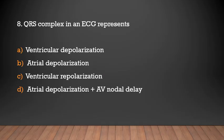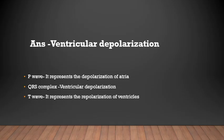QRS complex in an ECG represents ventricular depolarization. In an ECG: the P wave represents depolarization of the atria, the QRS complex represents ventricular depolarization, and the T wave represents repolarization of the ventricles.